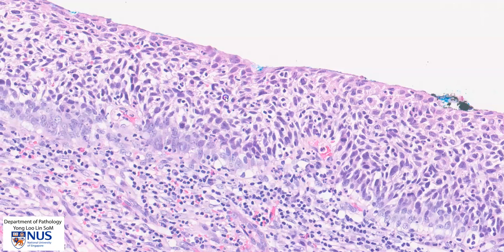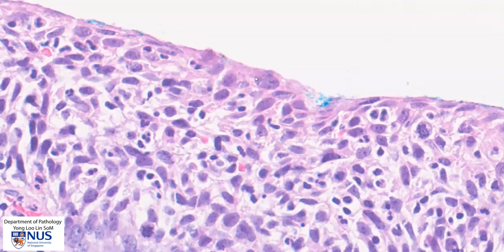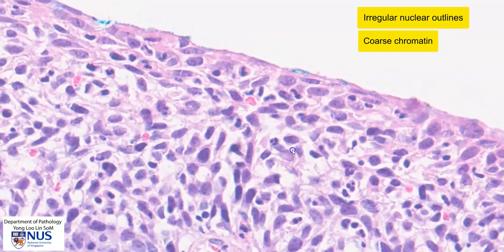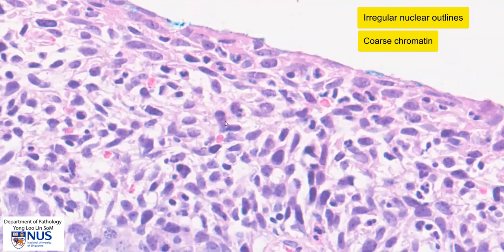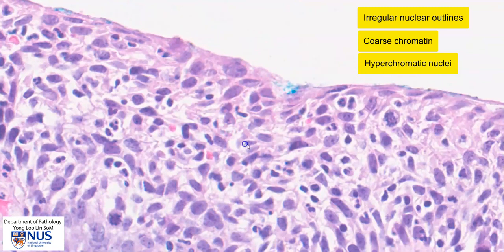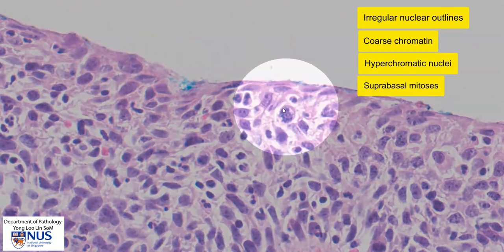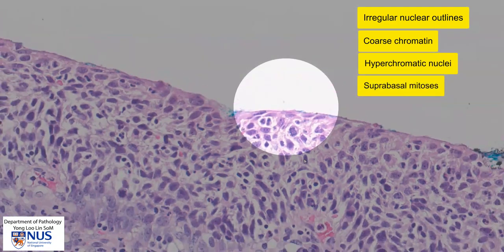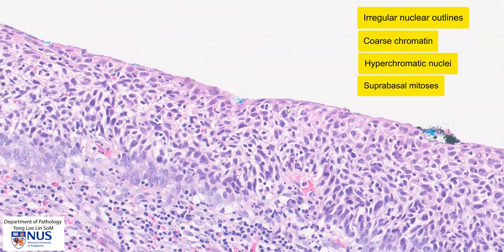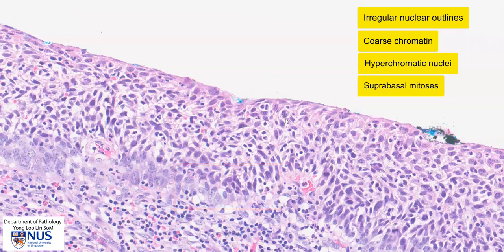Looking at individual nuclei, we can see that the nuclear outlines are quite irregular and the chromatin is coarse. Here again we have irregular nuclear outlines and quite hyperchromatic nuclei. We also have mitotic figures, and this mitotic figure is located very superficially, almost right at the surface of the squamous epithelium. In benign squamous epithelium we may see some mitotic figures close to the basal layers, but generally not above the middle half. The presence of mitotic figures in the middle and more superficial regions of the stratified squamous epithelium is usually a sign of dysplasia.